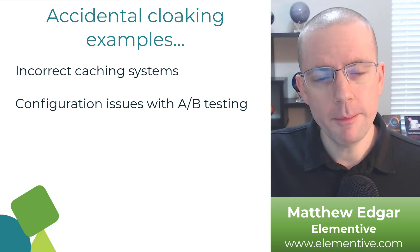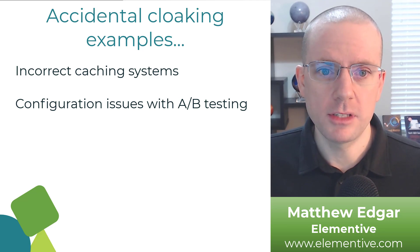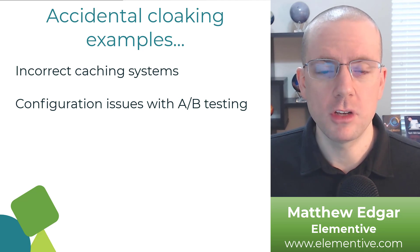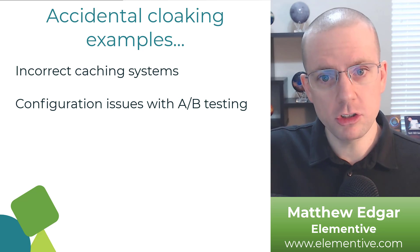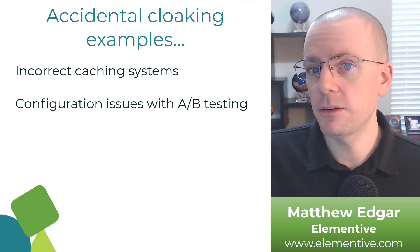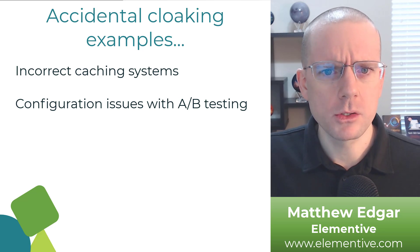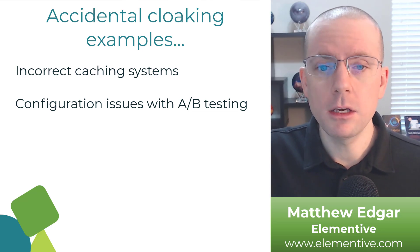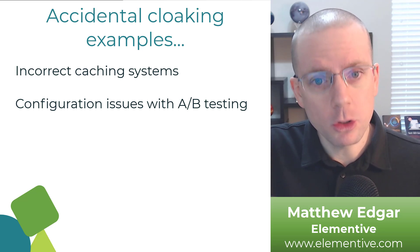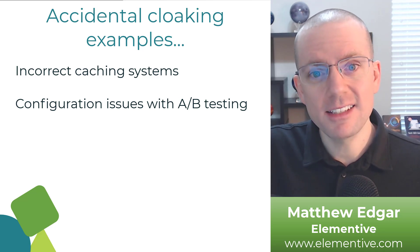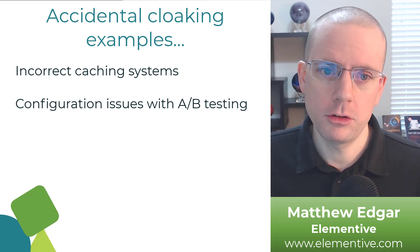This can also happen with A/B testing tools if they aren't configured correctly to serve the same base content to search engines and users. Because of that A/B testing tool, search engines and users might end up seeing very different content that seems to serve a different purpose. That's going to make Google think you're doing something manipulative or spammy, and you might get a manual action or start to see problems with your search rankings.